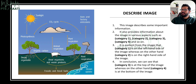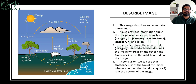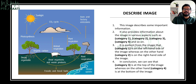Here is how I would speak all four sentences in sequence in the real exam: 'This image describes some important information. It also provides information about the image in various aspects such as blue, green, brown, yellow, and so on. It is evident from the image that blue is on the left hand side of the image, whereas on the other hand, brown is on the right hand side of the image. In conclusion, we can see that green is at the top of the image, whereas on the other hand, yellow is at the bottom of the image.' And job done. I'll use this same template for every single image, just picking a couple of colors, fitting them in, speaking fluently, and pronouncing correctly — and that gets a full score of 25 to 30 marks out of 90.